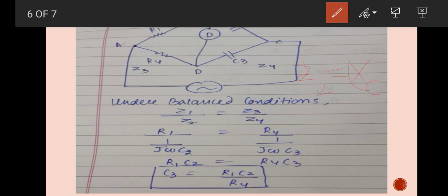Z2 will be equal to 1 by jwC2. Z3 will be equal to 1 by jwC3. And Z4 is equal to R4. Using that equation we can determine the value of C3. We know R1, R4 variable resistance box value, and C2 value.